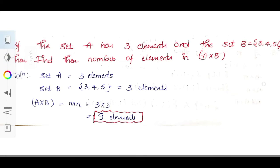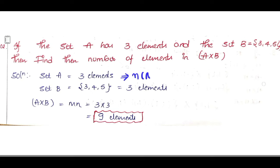See the second question — what are they asking? If the set A has 3 elements, that means the number of elements in set A equals 3. Set B is given as {3, 4, 5}, which also has 3 elements, so the number of elements in set B equals 3. They are asking us to find the number of elements in A cross B.